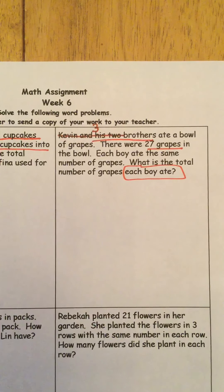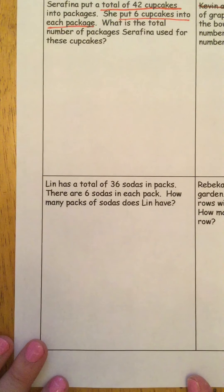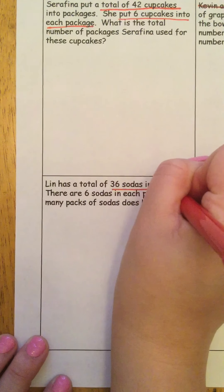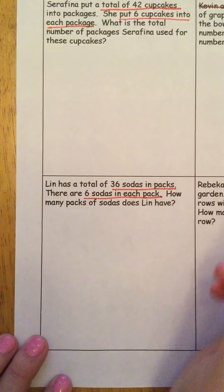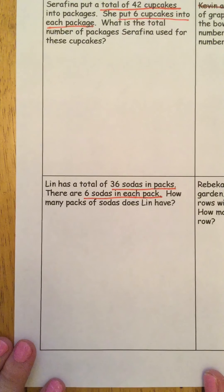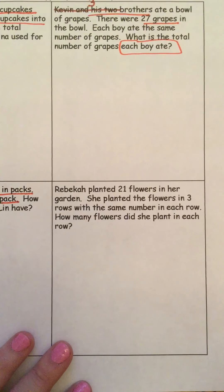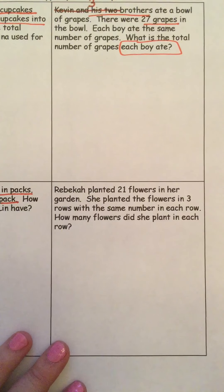Alright, so if you wrote your equation, it should look like this. Three stacks of jelly beans, five in each equals 15, right? So usually I make you write the related facts. That's my fact family. Remember in multiplication, your big number — your total — goes in the back.